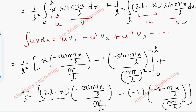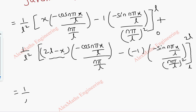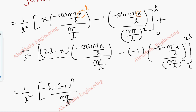Applying the upper limit for the first term: x = L gives L · cos(nπ) with L cancelling, so minus (−1)ⁿ by (nπ/L). The second term at x = L gives sin(nπ) = 0. Both lower limit terms are 0 because the first has x = 0 and the second has sin. For the second integral's upper limit at x = 2L, the first part is 0 and sin(2nπ) = 0, so that entire term is 0.